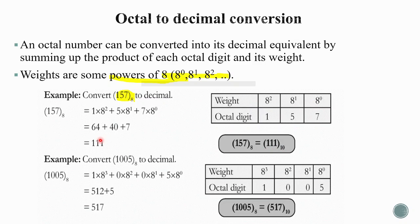Another octal example: 1005 base 8. Write the digits 1, 0, 0, 5 and assign weights 8⁰, 8¹, 8², 8³ from the LSB. Multiplying and adding the relevant columns gives 517. So 1005 base 8 equals decimal 517.